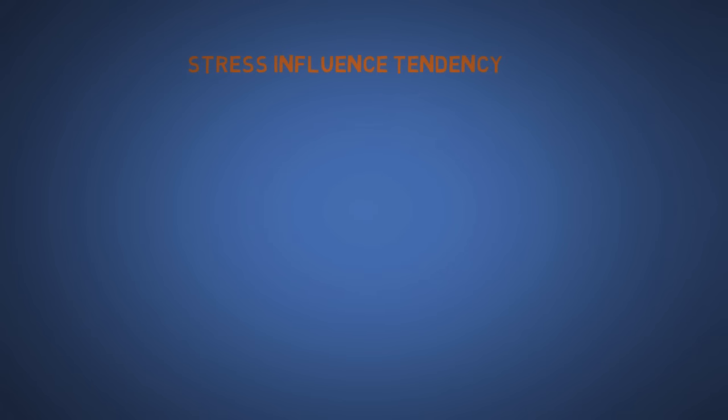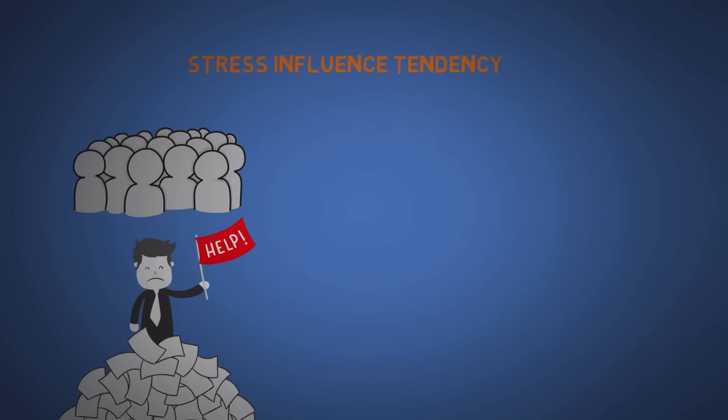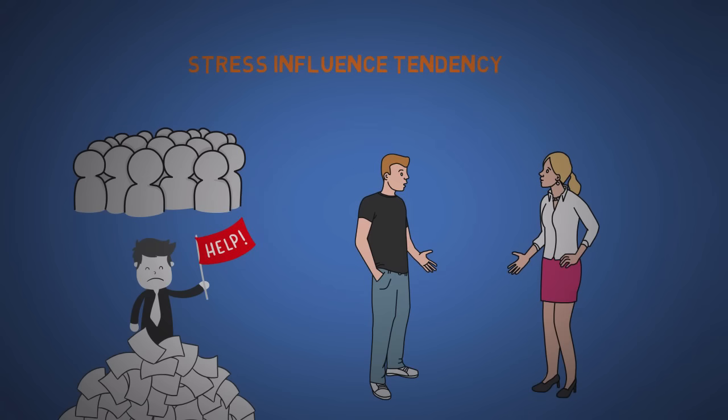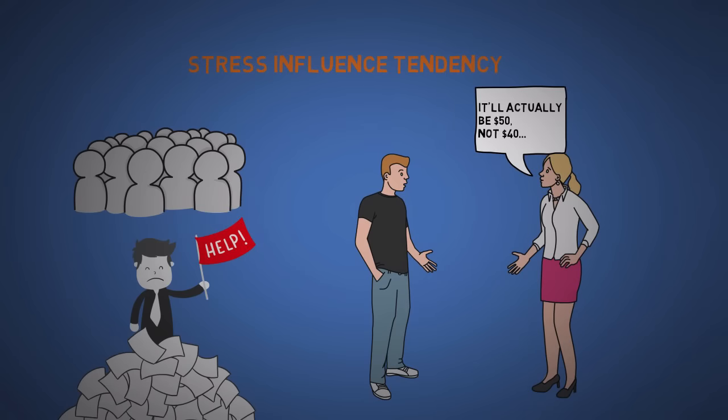The seventeenth is stress influence tendency. Stress can cause us to make bad decisions. Think of timeshares where they might put you in a tight room where you just want to get out. Or the times when you buy something and they say they're going to check with their manager first, then they come back 10 minutes later, you talk some more and then they say again, well let me go talk to my manager again. Then you say, screw it! I'll just take it.